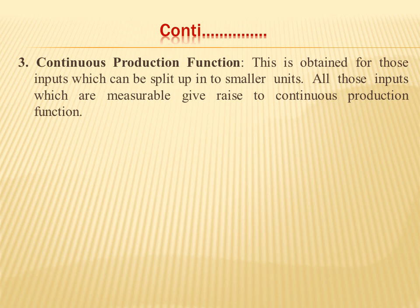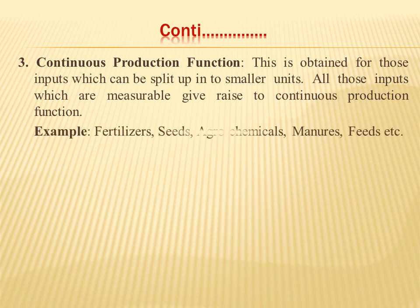The third type is the continuous production function. This type of relationship can be obtained for those inputs which can be split up into smaller units. For example, fertilizers, seeds, agrochemicals, manure, and feed. These types of inputs can be broken into smaller fractions or smaller units.